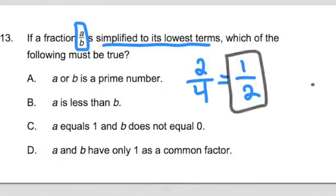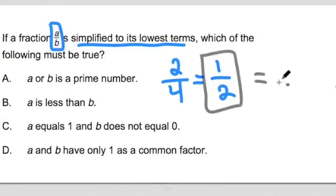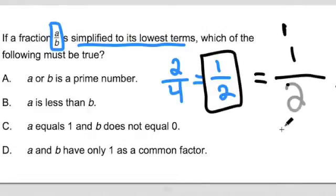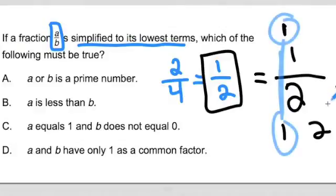Now, what does lowest terms mean? It means that this fraction here, the 1 only has 1 as a factor, and the 2 has 1 and 2 as a factor. Lowest terms means that your number only has 1 as a common factor. So, ultimately, a and b, they're reduced to lowest terms when a and b only share 1 as a common factor.